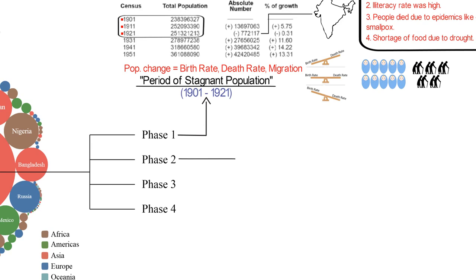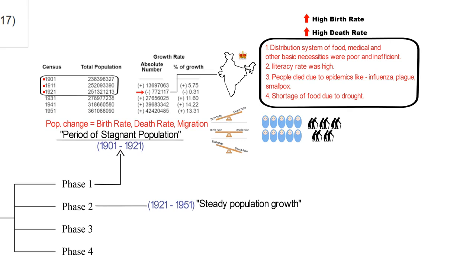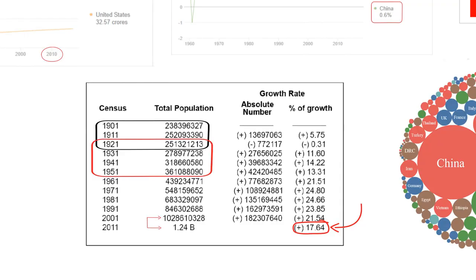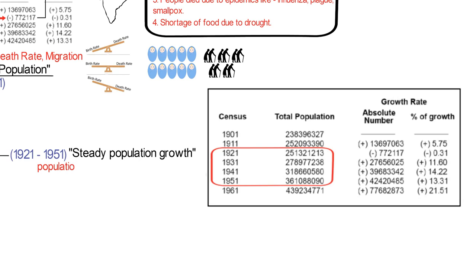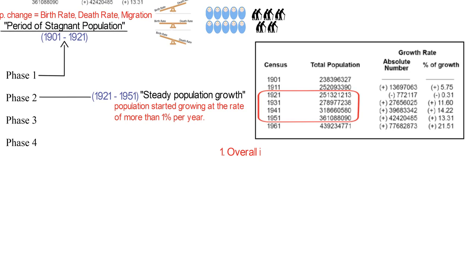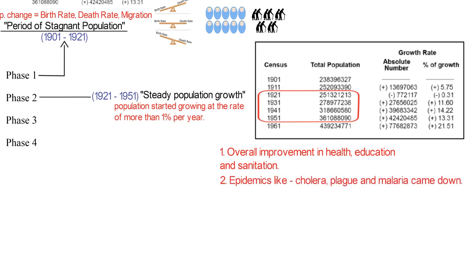Now we'll look at the second phase. The second phase is from 1921 to 1951. This period is referred to as the period of steady population growth. In the previous phase, both the birth rate and death rate were high, and that led to stagnation. After 1921, the mortality rate went down and population started growing at the rate of more than 1% per year, simply because there was an overall improvement in health, education, and sanitation throughout the country. These developments helped in controlling epidemics like cholera, plague, and malaria.